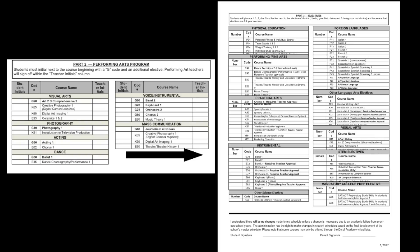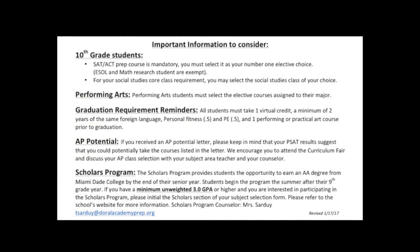Please be advised that students may lose an elective class based on their FSA scores. As you complete your subject selection sheet, consider the following important information. Tenth grade students: the SAT and ACT prep course is mandatory — you must select it as your number one elective choice. ESOL and math research students are exempt. For your social studies core class requirement, you may select the social studies class of your choice. Performing arts students must select the courses assigned to their major.